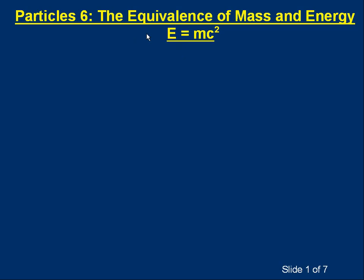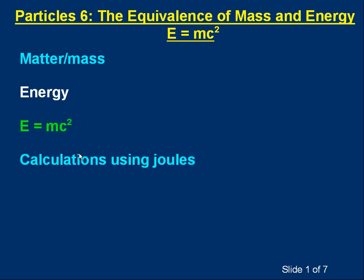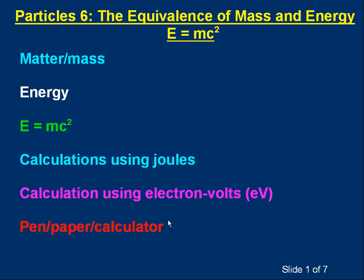Hello, welcome to this lesson on the equivalence of mass and energy and the equation E equals mc squared. We'll start by saying a few words about matter and mass and then a few words about energy. Then we can talk about how mass and energy are equivalent, really different forms of the same thing, and the equation E equals mc squared expresses this. We'll then do a couple of calculations using joules as the energy unit and a calculation using electron volts as the energy unit. So you want a pen, paper and calculator so you can have a go at the calculations for yourself.